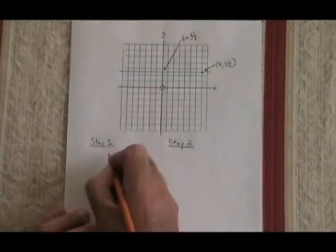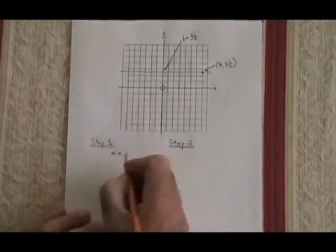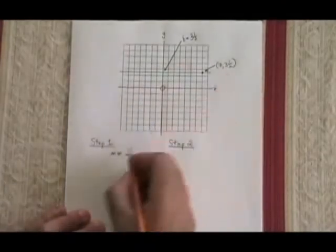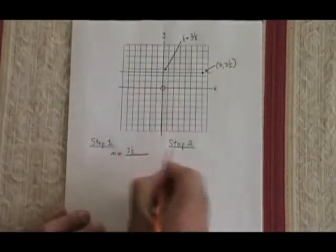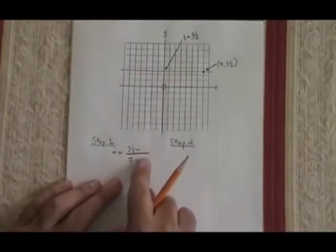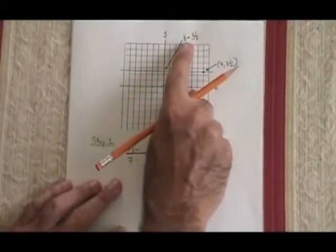To find my slope, I use the slope formula. My y2 is 3.5, and my x2 is 7. For point 1, I don't have x and y coordinates. I'm just given this b equals 3.5.